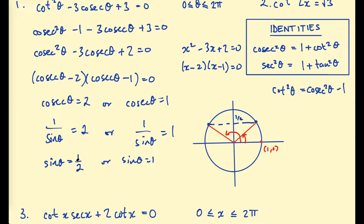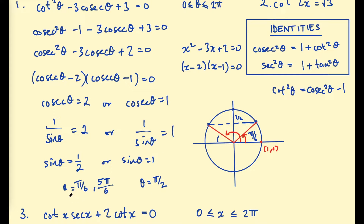When sin θ equals 1/2, θ equals π/6 — we need our answers in radians since the interval is in radians. So this angle is π/6. The angle of rotation to the second point is π minus π/6, which is 5π/6. When sin θ equals 1, there's only one point between 0 and 2π where that holds — up at the top, where θ equals π/2. Our final answers are θ = π/6, π/2, and 5π/6.